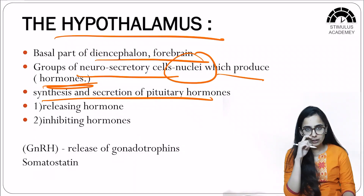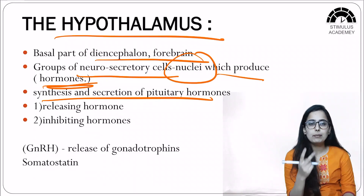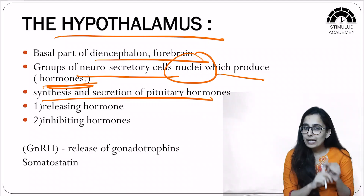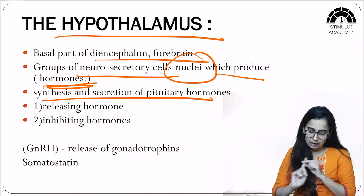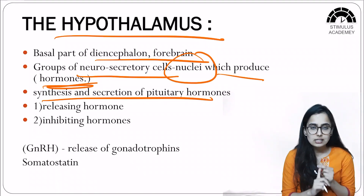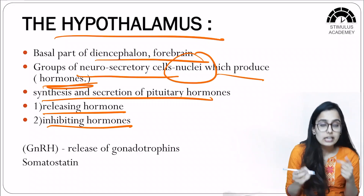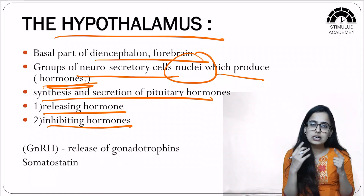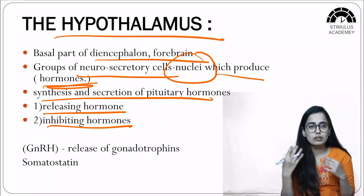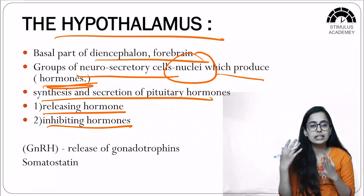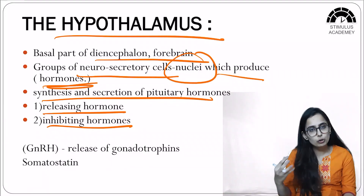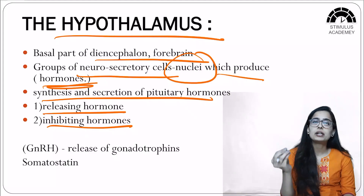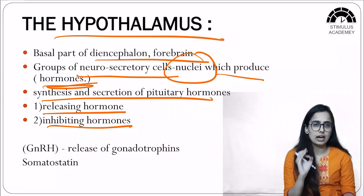There are two types of hormones released from the hypothalamus depending on their action on the pituitary gland. The first is releasing hormone and the second is inhibiting hormone. Releasing hormones lead to the release of pituitary hormones, while inhibiting hormones inhibit the pituitary gland.